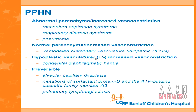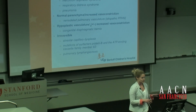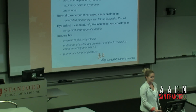Examples of PPHN categories: abnormal parenchyma with increased vasoconstriction includes meconium aspirate babies, respiratory distress syndrome, and pneumonia. Normal parenchyma with increased vasoconstriction includes idiopathic PPHN with already-remodeled pulmonary vasculature. Hypoplastic vasculature with increased vasoconstriction includes congenital diaphragmatic hernia babies. There are also some irreversible kinds of pulmonary hypertension where nothing can be done for the baby except withdraw support.